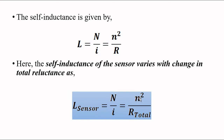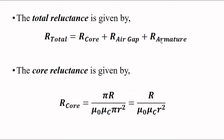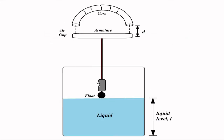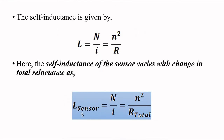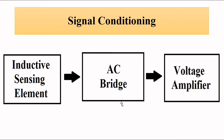Because the total reluctance changes, the sensor inductance changes as per the relationship L = N²/R_total, where N is the number of turns of coil. The core and armature reluctances are fixed; only the air gap reluctance varies with the air gap distance. This change in inductance can be converted into a suitable voltage or current signal using AC bridges. Further signal conditioning — amplification, noise filtering, linearization — and then analog-to-digital conversion through sampling, quantization, and coding can provide a digital readout.